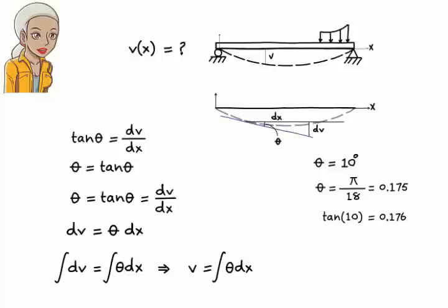This can be done by expressing theta in terms of bending moment in the beam. And since we know how to express bending moment in terms of x, then we can easily calculate the integral of theta dx. So, let's see how we can relate theta to bending moment, m.